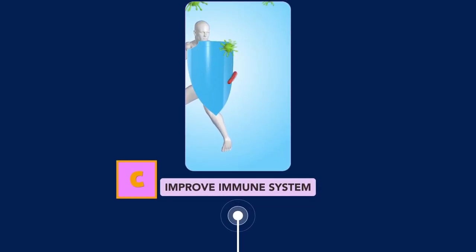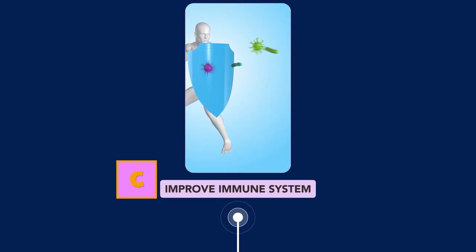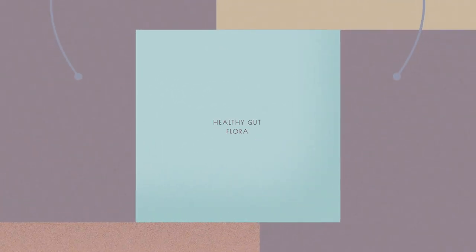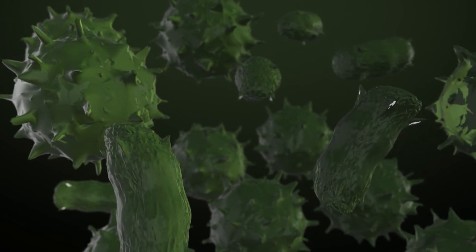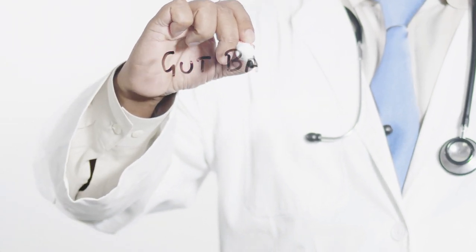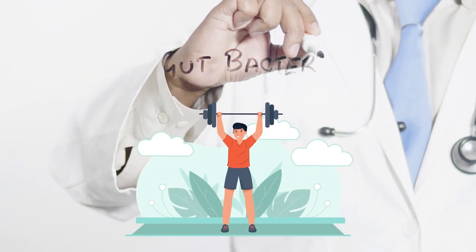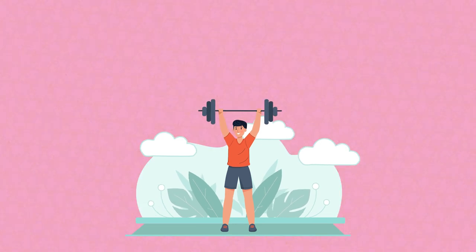C: Improved immune system — the gut microbiome helps with immune system maintenance, providing a layer of defense against pathogens. D: Reduced risk of disease — healthy gut flora can help reduce the risk of various diseases and illnesses, including allergies, asthma, inflammatory bowel disease, and some types of cancer. E: Controlling weight — gut bacteria have been linked to obesity and other metabolic disorders, indicating an influence on weight control.